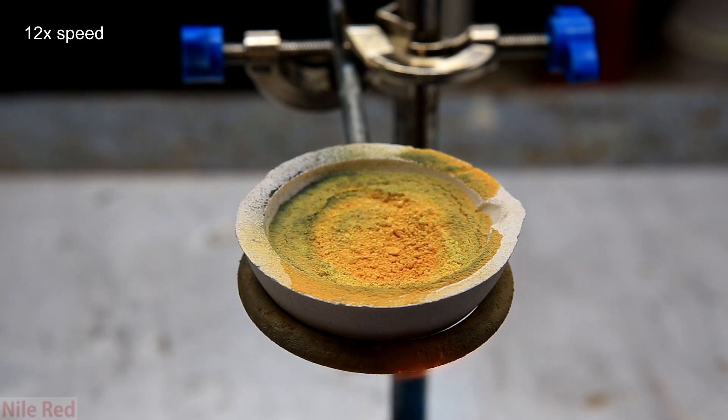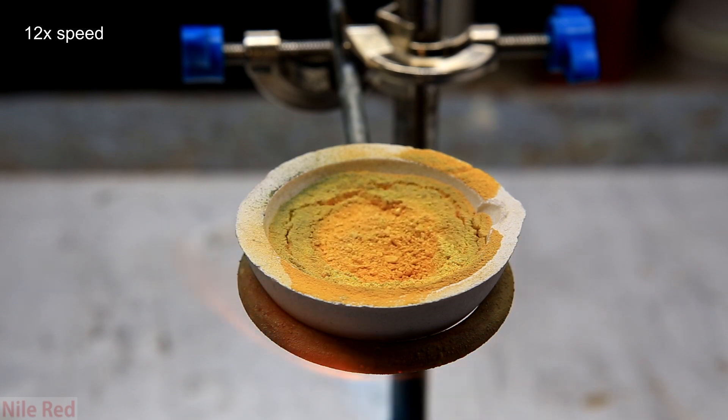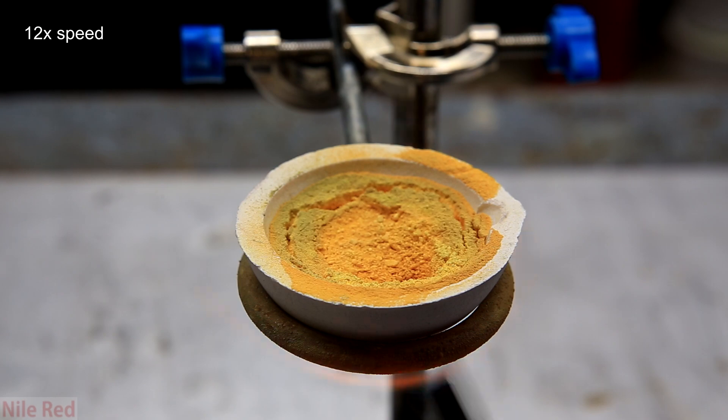My torch just was not hot enough to decompose the bismuth oxide in the crucible. And instead of melting, it's simply all oxidized and never melted.